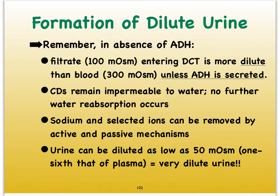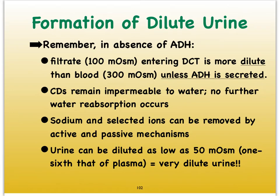Sodium and some other ions can be removed from our distal convoluted tubule and even collecting ducts, but that requires hormones such as aldosterone or parathyroid hormone. Consequently, if these additional ions are removed by either active and passive mechanisms with the help of hormones, we can actually excrete a urine that is extremely dilute — it can go down to 50 milliosmoles. That's one-sixth the osmolality of the plasma, so a very watery urine.